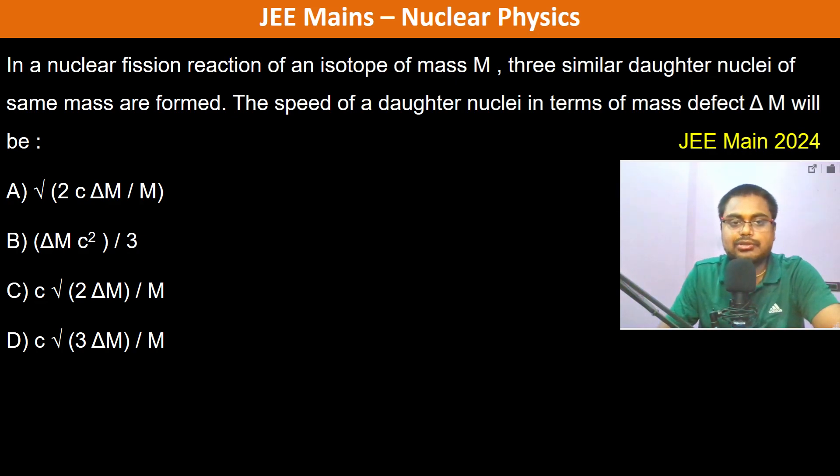In a nuclear fission reaction of an isotope of mass M, three similar daughter nuclei of the same mass are formed. The isotope breaks down into M/3, M/3, and M/3. The speed of a daughter nucleus in terms of the mass defect ΔM will be: